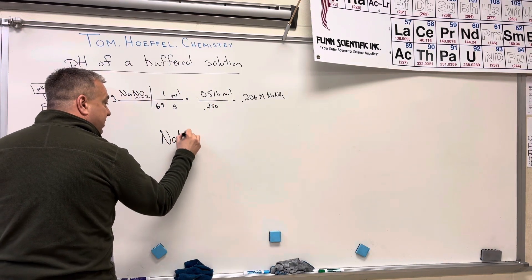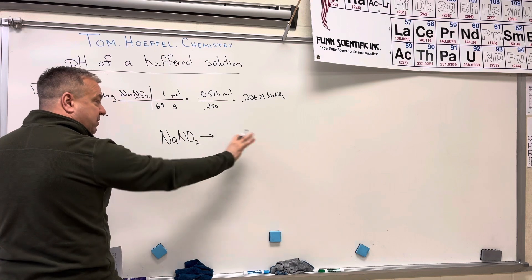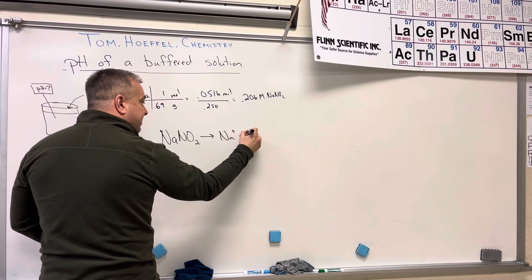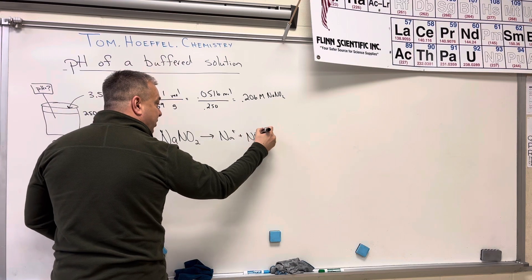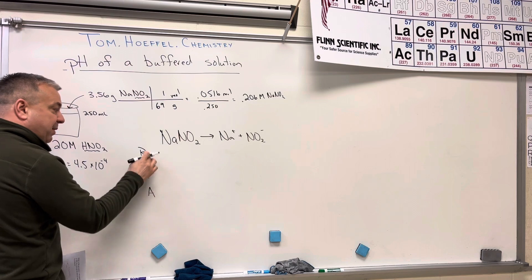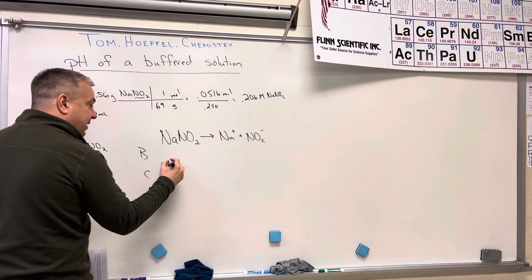So here's the sodium nitrite. And it's going to be a single arrow because it pushes all the way to the right, creating sodium ions and nitrite ions. And I'm going to do a BCA for this before, change after.